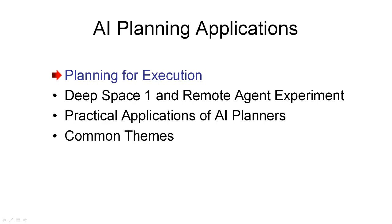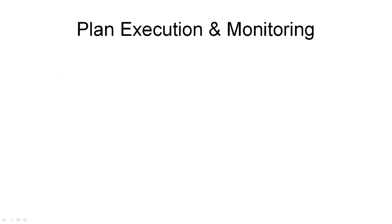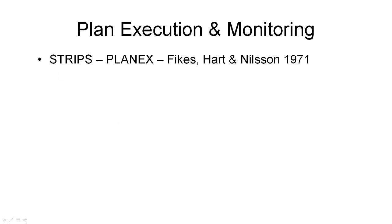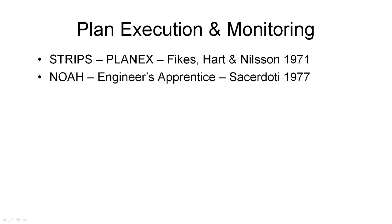Plans only become useful when they are executed. Even the earliest AI planners were linked with plan execution capabilities, as shown by the use of the STRIPS planner alongside the PLANEX plan executor over 40 years ago in the Shakey robot. Sacerdoti's NOAH planner was used to follow along while an apprentice engineer repaired a hydraulic pump, and the system maintained a model of the state of the pump to suggest fixes when the apprentice ran into problems.